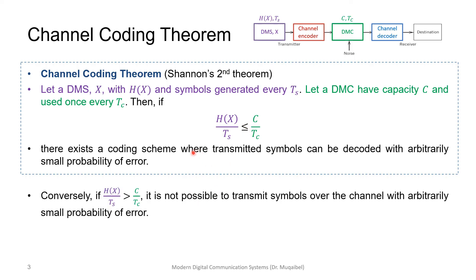Conversely, if we take the opposite—if the source rate is greater than the channel capability—it's not possible to transmit symbols over the channel with arbitrarily small probability of error. That is to say, we're going to have errors.